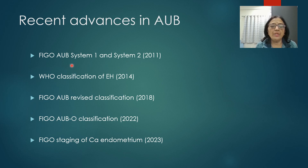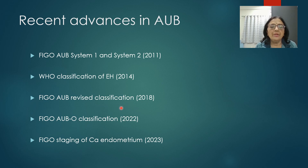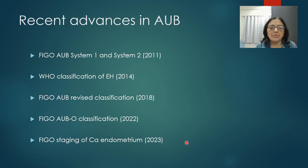We have already seen AUB System 1 in AUB Part 1. Next came the WHO classification of endometrial hyperplasia in 2014. Then there was the FIGO AUB revised classification in 2018. The most recent additions are the AUB subclassification by FIGO in 2024 and FIGO staging of carcinoma endometrium in 2023.